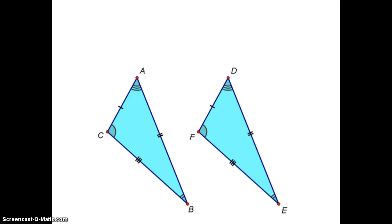So, looking at these two triangles, we know that they're congruent because all six parts of one triangle are congruent to all six corresponding parts of the second triangle.